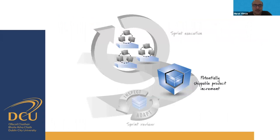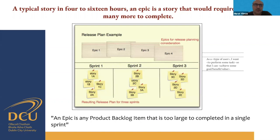We inspect and adapt in the sprint review. After sprint execution, we need a potentially shippable product increment — not the full product, but an increment the customer can inspect. Based on this executable product piece, we inspect and adapt. A typical story takes four to sixteen hours; an epic story requires more time. There will be some epics in the release planning, but normally you can see sprint one, sprint two, and sprint three with several different stories embedded in each.